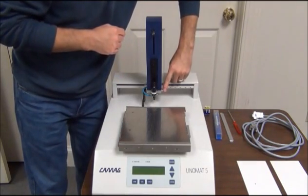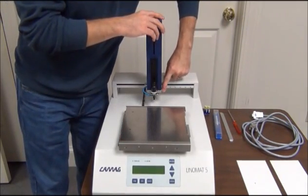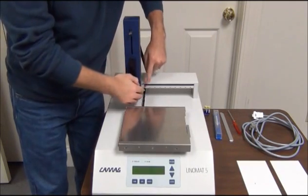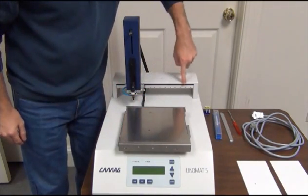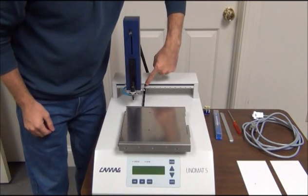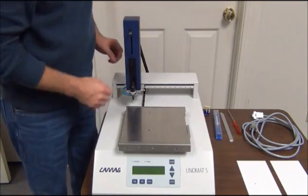The turret can be moved by pressing in this button or trigger here. And you see when you press that in, you can slide it back and forth. There's also a ruler on the back to show you the position. And there's a mark here, a piece of metal that will mark the place on the ruler.